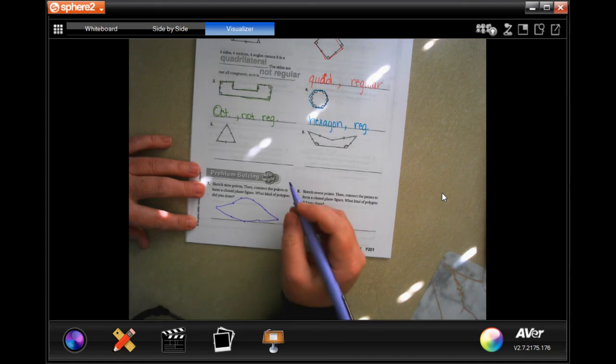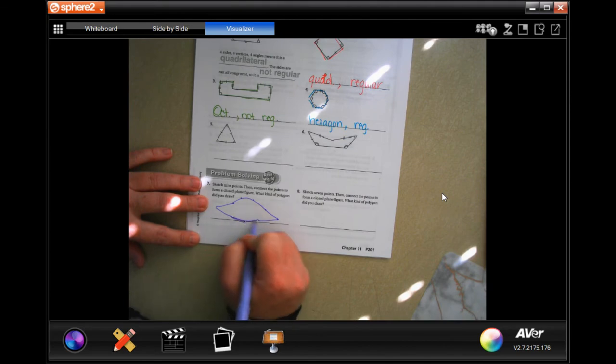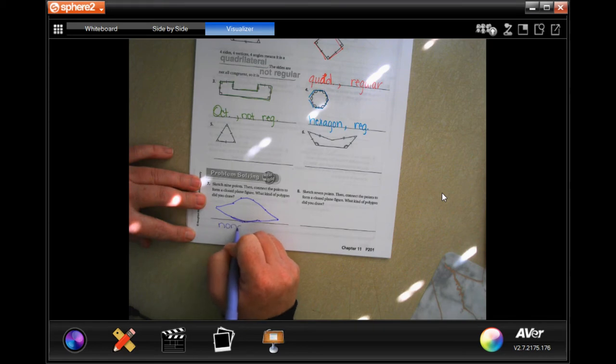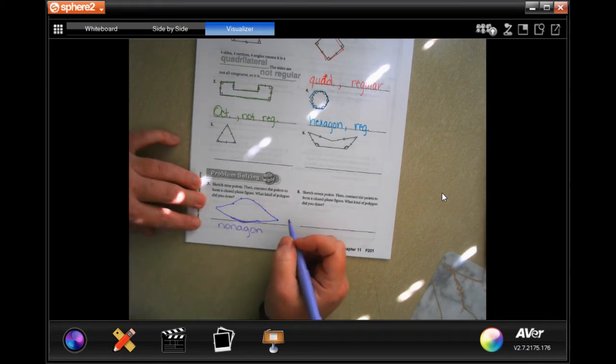Okay, well nine points, nine sides, which I really did a bad job - I kind of rounded some of them - but that would be a nonagon. Nine sides, nonagon.